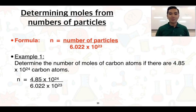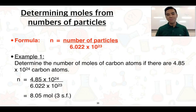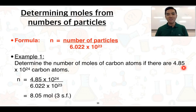The calculation gives us 8.05 moles, expressed to three significant figures. Keep in mind that answers can only have as many significant figures as the given data. Looking at 4.85 times 10 to the 24, we can count one, two, three significant figures, so our answer can only have three significant figures as well.